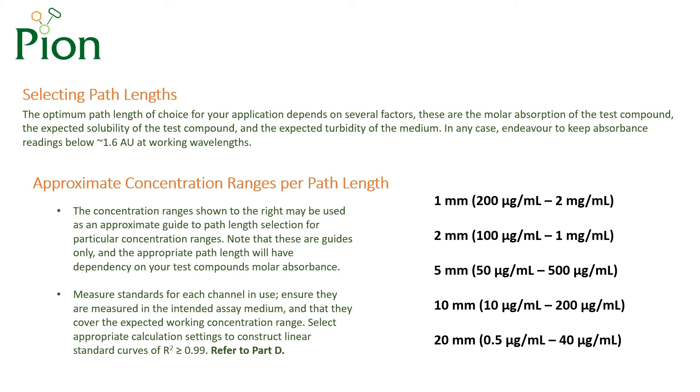When selecting a path length tip initially, we advise basing your initial selection on the expected concentration ranges shown here. Bear in mind that also you should aim to remain below a working absorption value of 1.6 absorbance units.